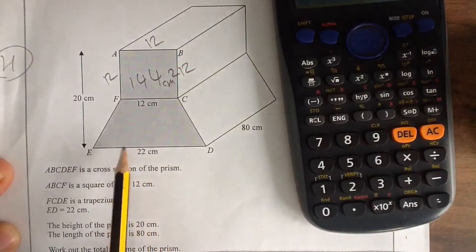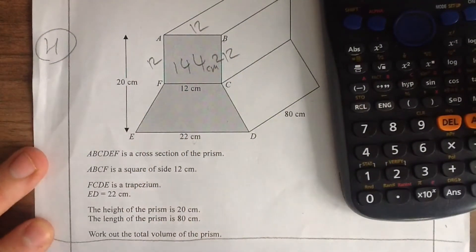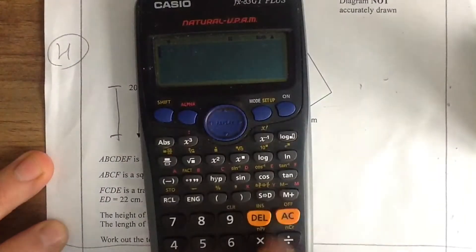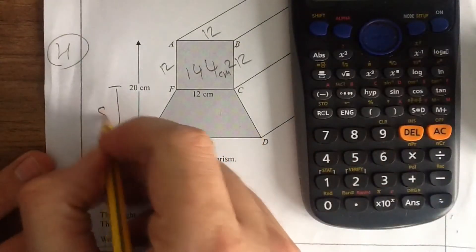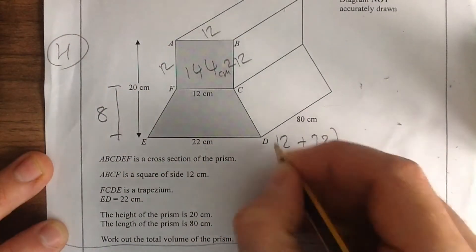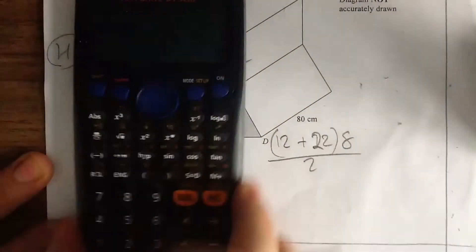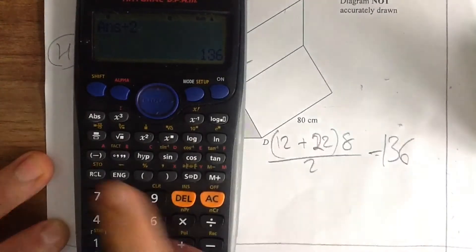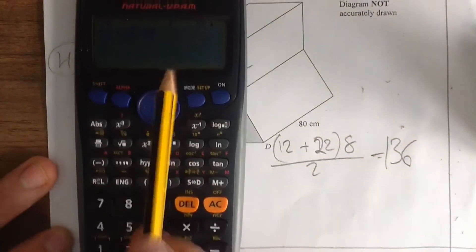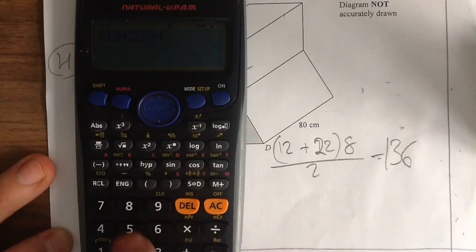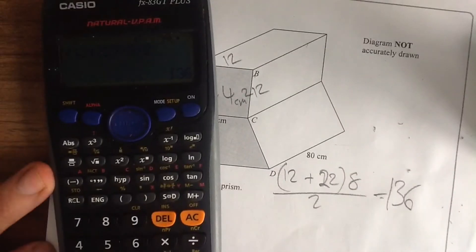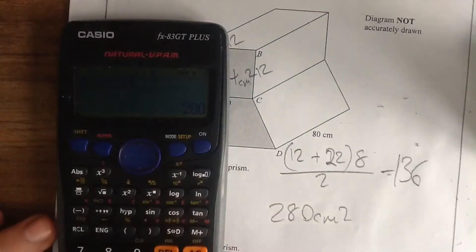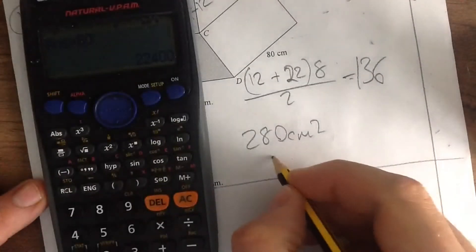The trapezium formula is (top plus bottom) times height divided by 2. The total height is 20 but the square takes up 12, so the trapezium height is 20 minus 12 equals 8. So the trapezium area is (12 plus 22) times 8 divided by 2. It's important to press equals after 12 plus 22 before multiplying. Adding that to 144 gives 280 cm² for the whole cross-section. Volume is 280 times 80 equals 22,400 cm³.